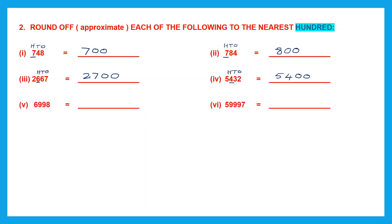Question 5: underline the digit in the hundreds place — it's 9 — and the digit to its right is also more than 5. That means the underlined digit will change to the next one by adding 1. So let's add 1 to 9: 69 plus 1 is 70. So we write 70. The other 2 digits to the right of the underlined digit will be replaced with 0s.